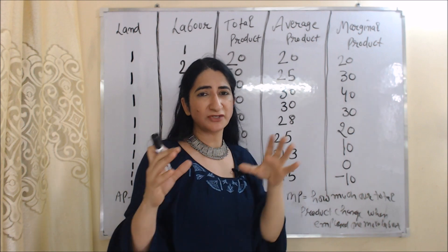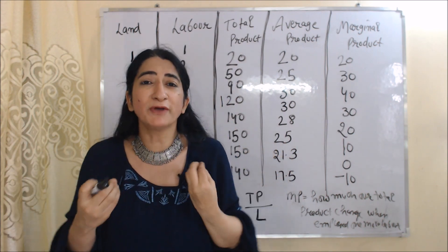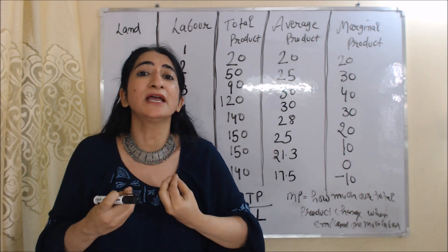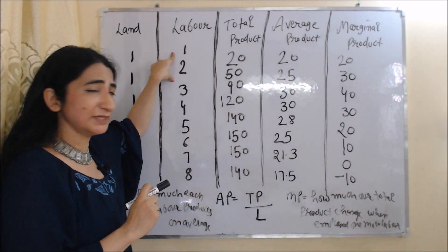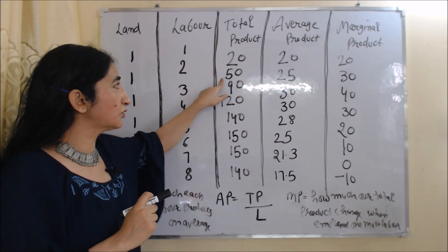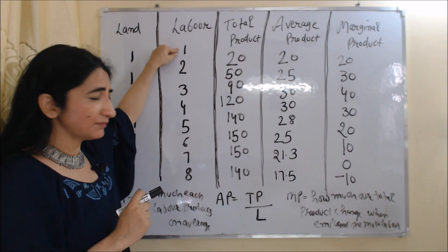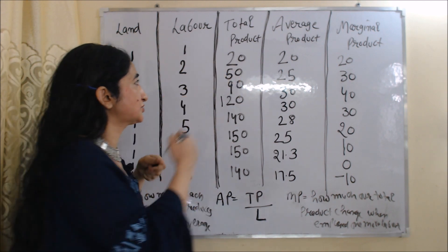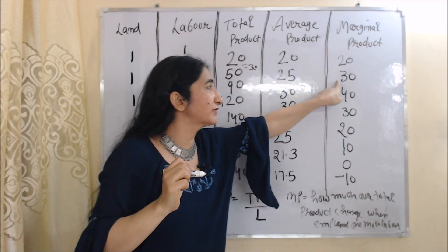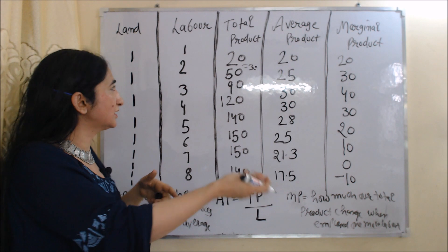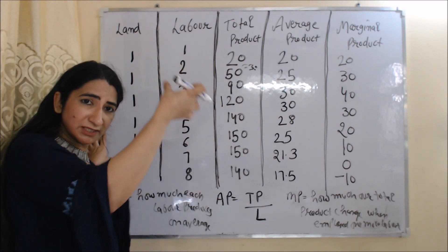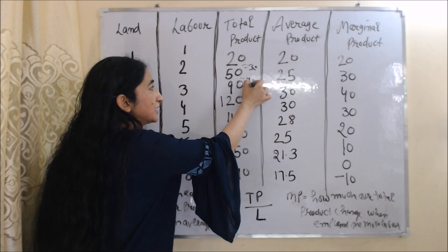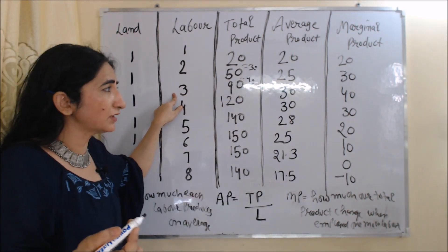The last column is marginal product, which tells us how much total product changes when we employ one more labor. When one labor is working, TP is 20; when two laborers are working, TP is 50. So as we increase labor from 1 to 2, total product increases from 20 to 50 — that increase of 30 is our marginal product. Similarly, when labor increases from 2 to 3, TP increases from 50 to 90, so marginal product is 90 minus 50 = 40.